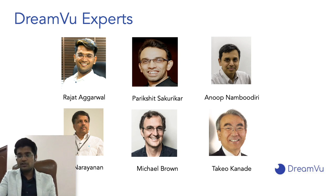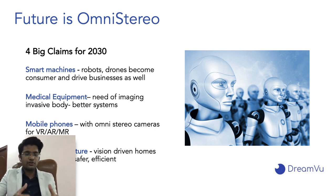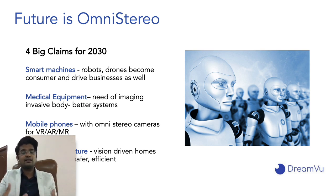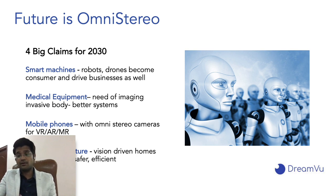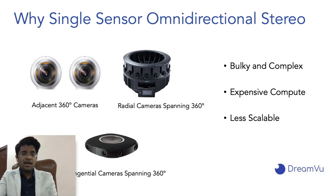Omni-directional stereo data is also uncommon for traditional computer vision methods, which makes it challenging to scale and commercialize. In the next 10 years we expect these emerging markets to make real use of omni stereo technology. There are different segments: smart machines needing complete situational awareness, medical endoscopes for 360-degree invasive imaging, mobile phones with stereo cameras, and smart infrastructure for factory and warehouse settings for creating digital twins and enabling remote tele-operations.